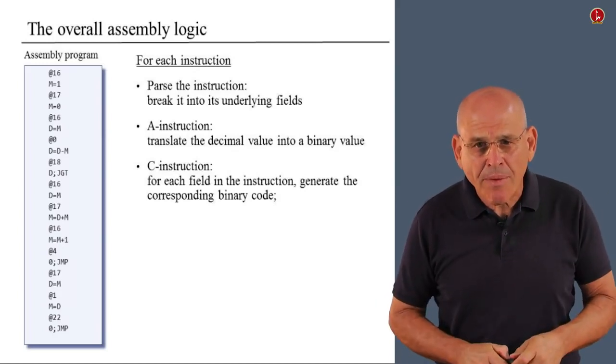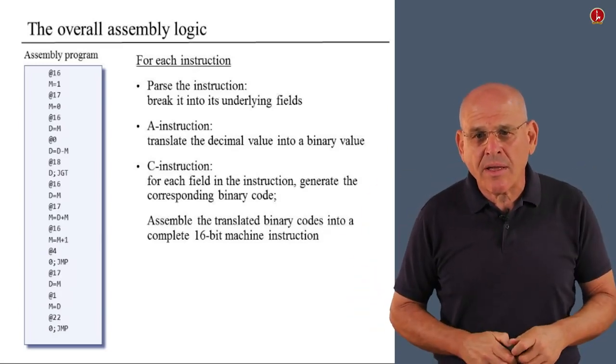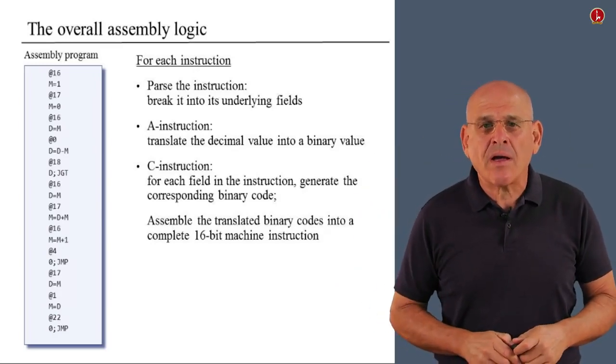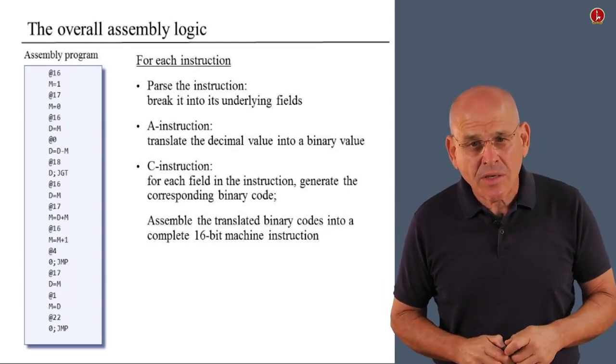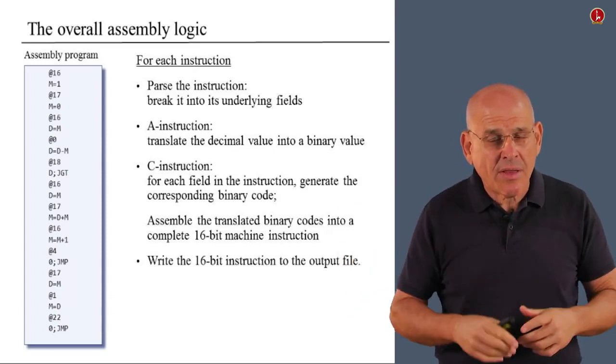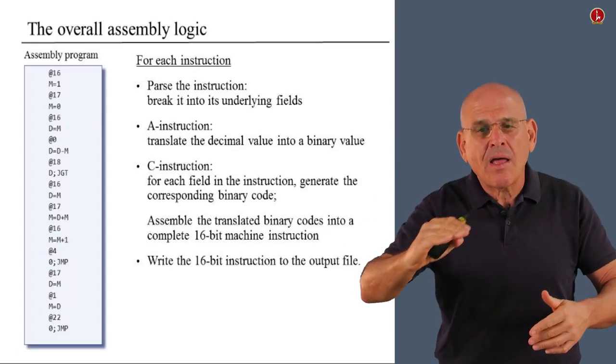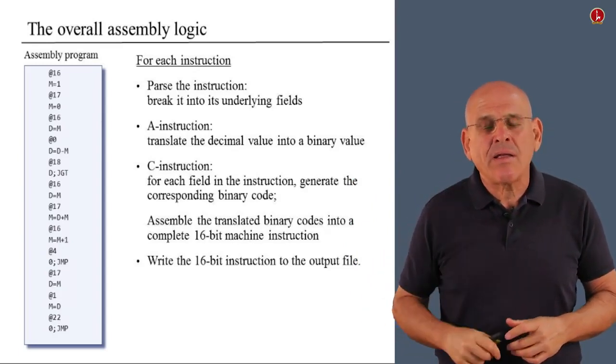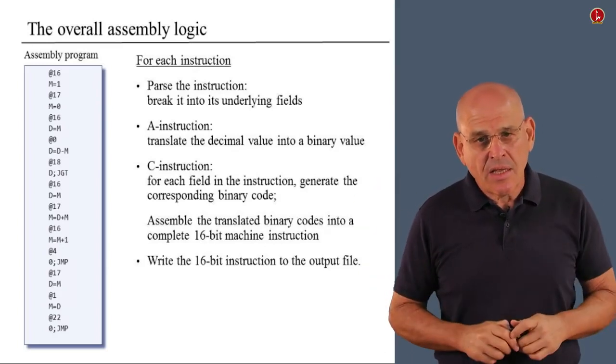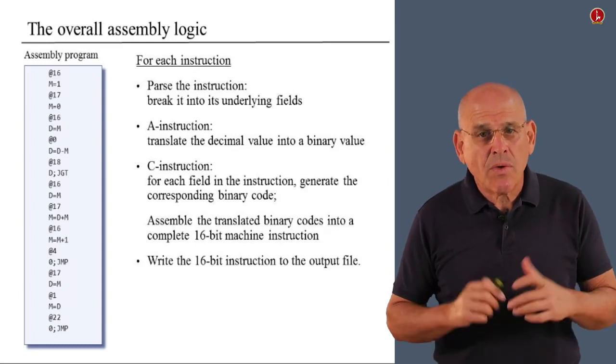comp, dest, and jump. And also for every one of these fields, we generate the corresponding binary bits. And then we assemble all these codes that we created into a single 16-bit instruction. And we write this instruction to an output file, which is not seen here in the picture. But the assembler creates this empty file at the beginning, and begins to populate it with lines, each line being a sequence of, or a string of 16 zeros and ones. So this is the overall process of translating a hack program, a program that consists of only A and C instructions without symbols.